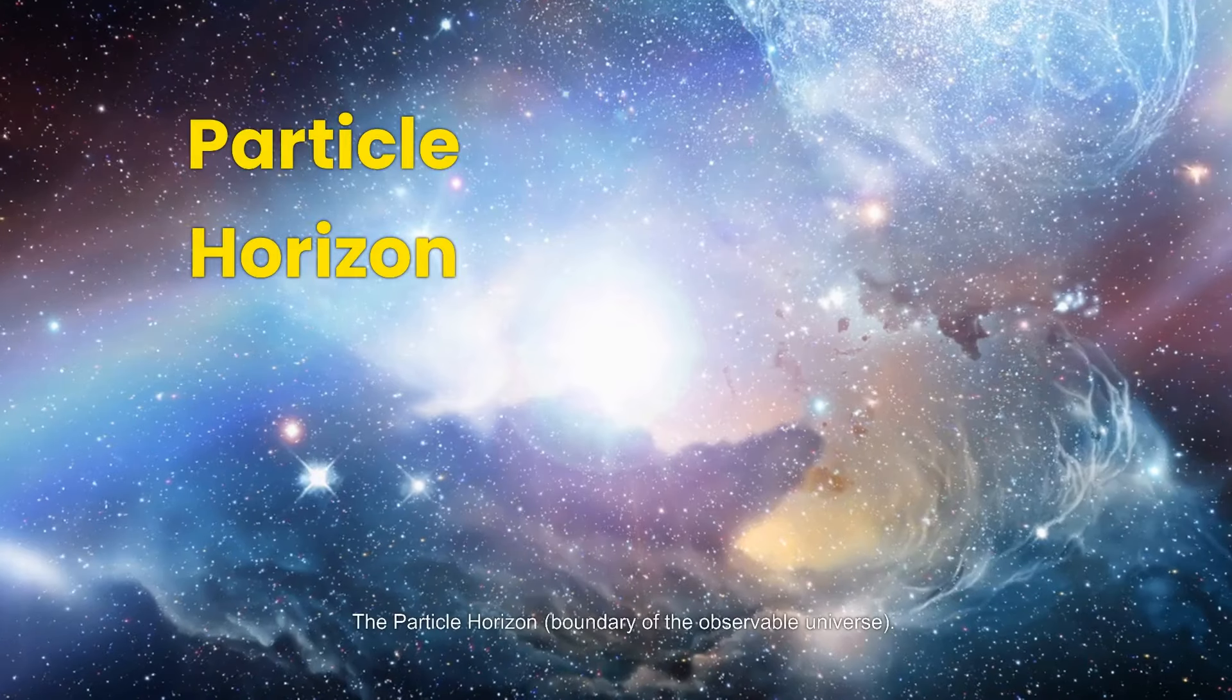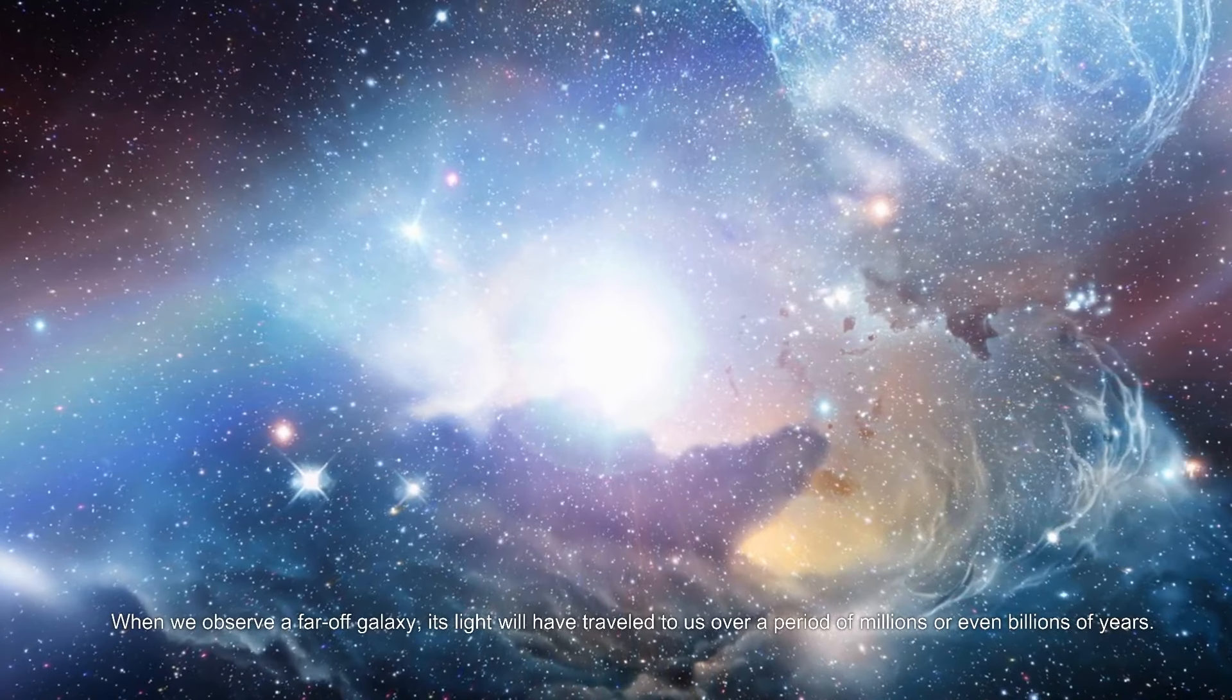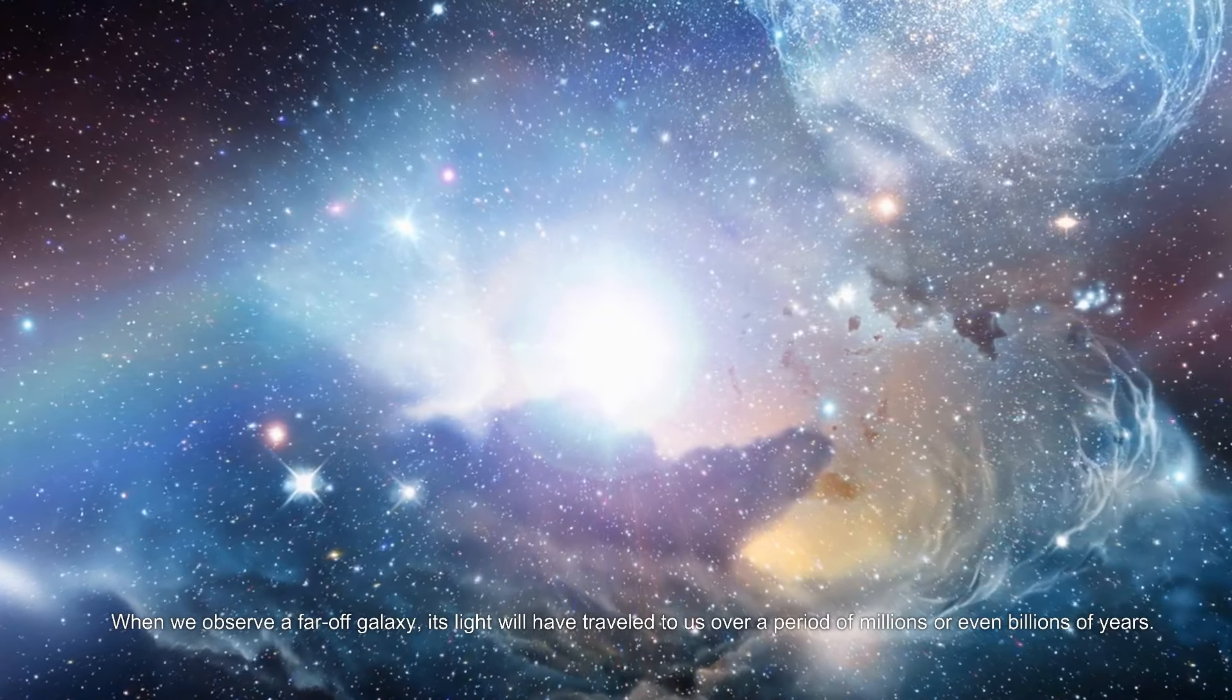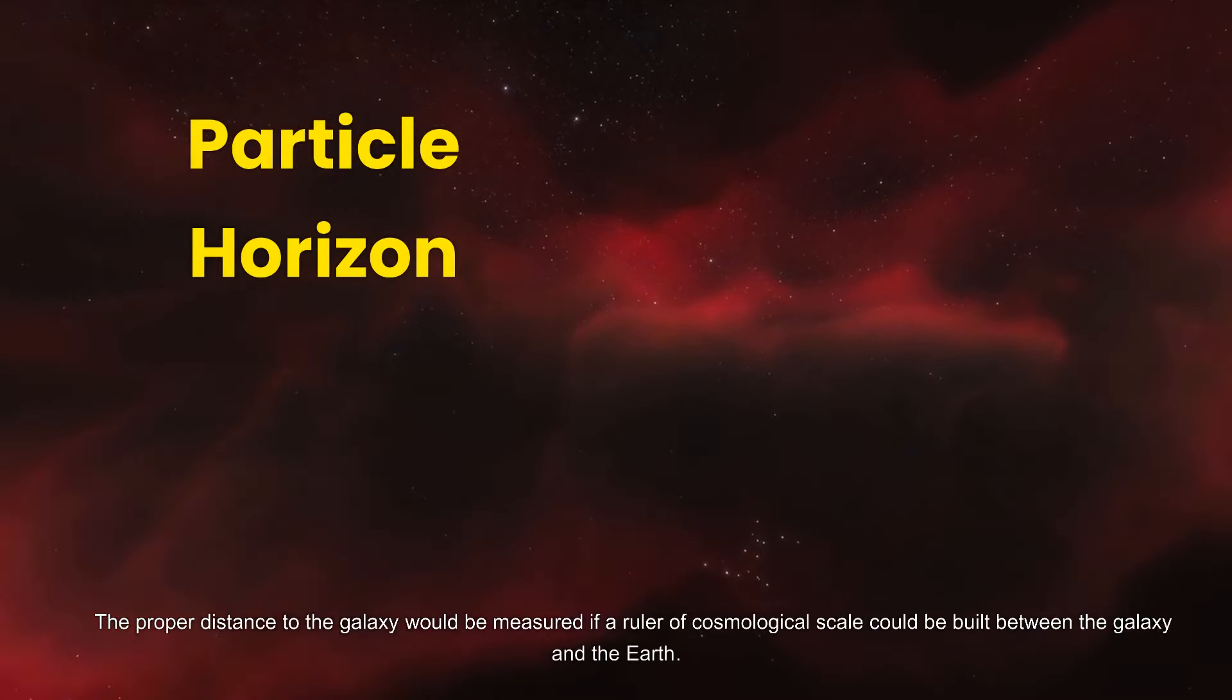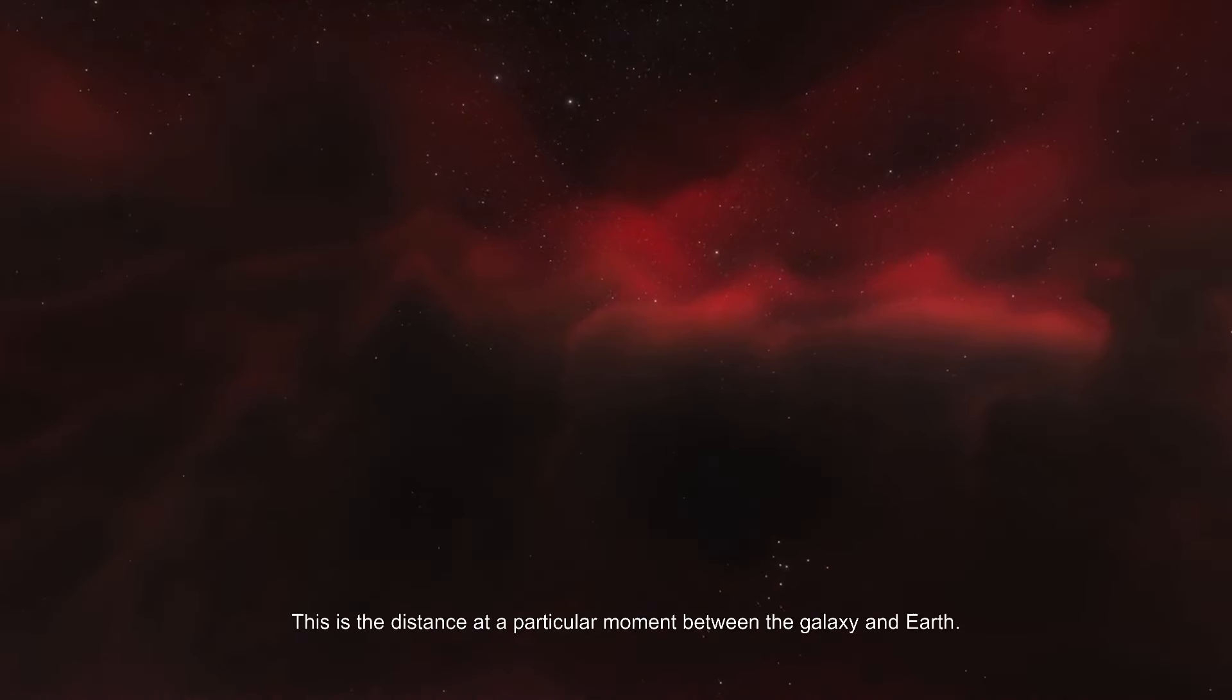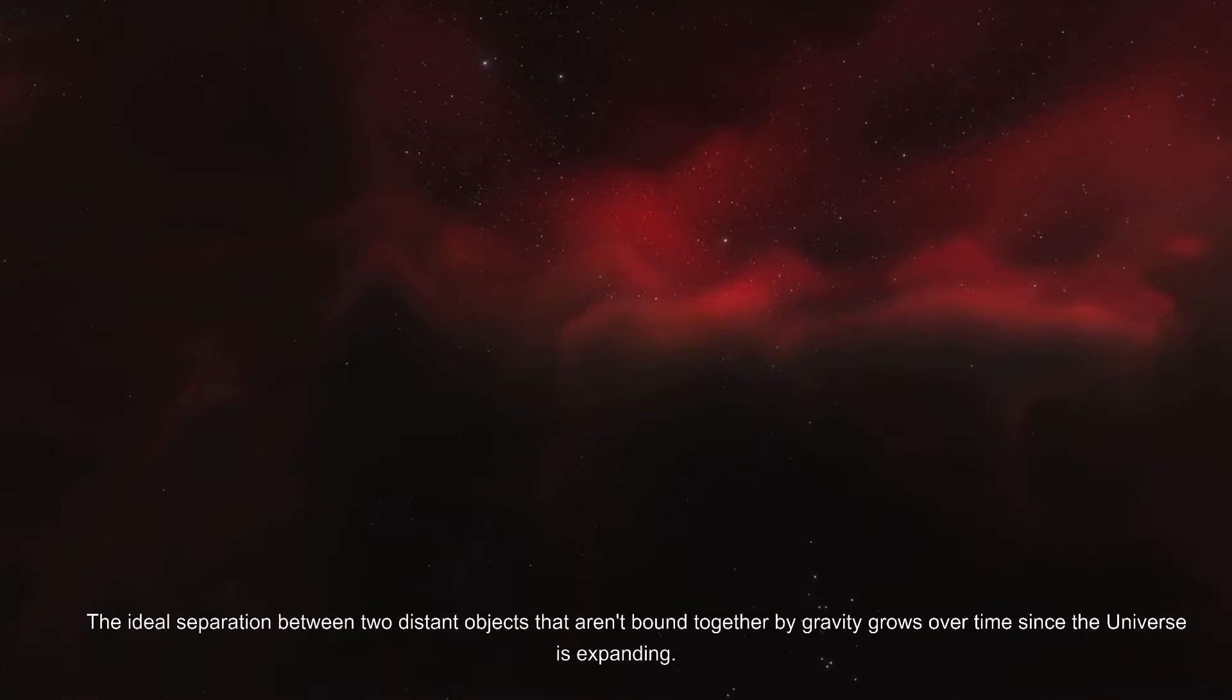The particle horizon is the boundary of the observable universe. When we observe a far-off galaxy, its light will have traveled to us over millions or even billions of years. The proper distance to the galaxy would be measured if a ruler of cosmological scale could be built between the galaxy and Earth. This is the distance at a particular moment between the galaxy and Earth.